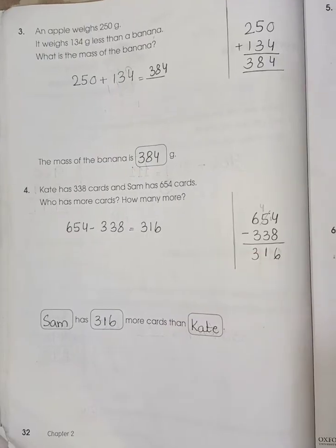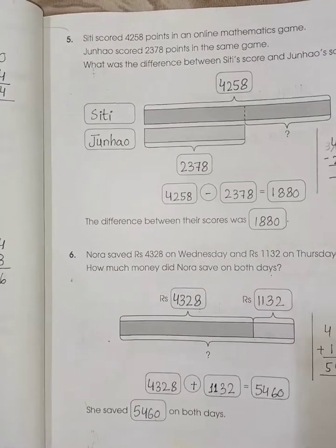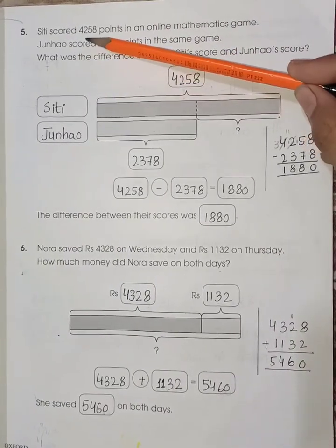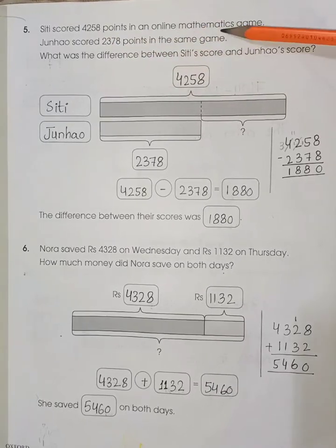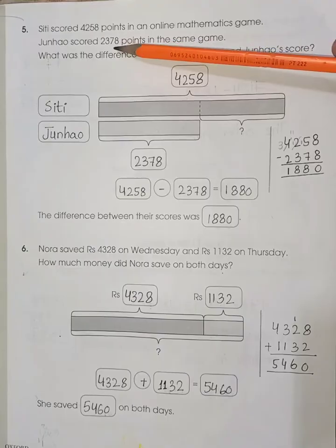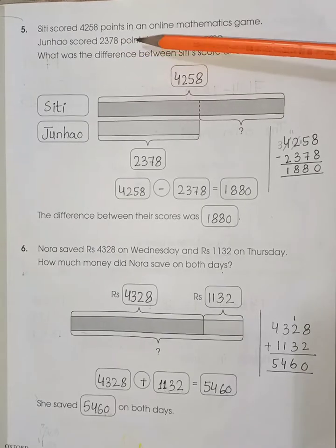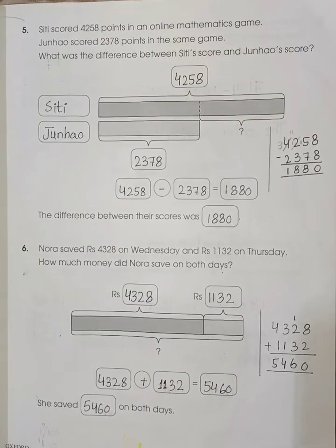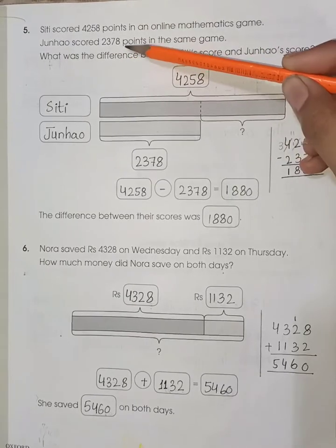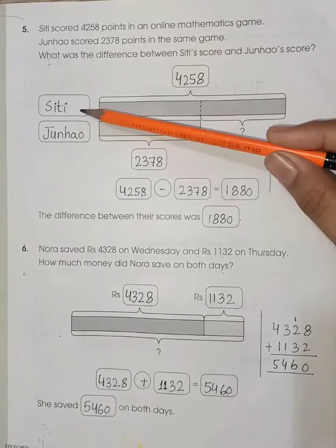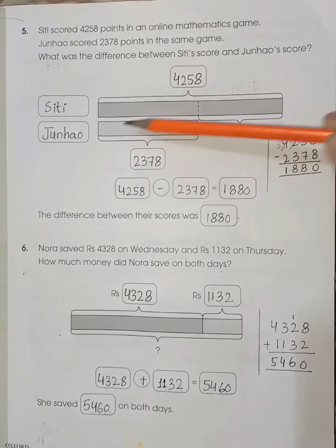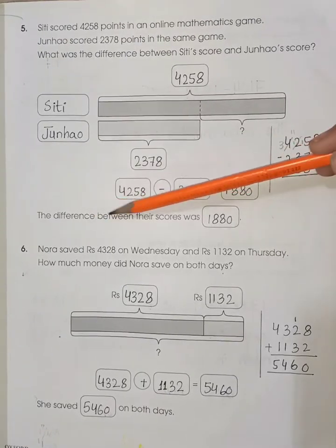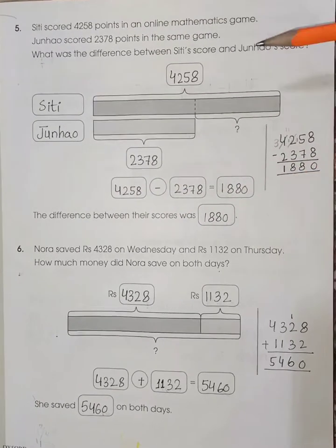Page number 33, word problem number 5: City scored 4258 points in an online mathematics game. Jin Hao scored 2378 points in the same game. What was the difference between City's score and Jin Hao's score? When we talk about the difference, we subtract both numbers. We write City's score, then Jin Hao's score, subtract, and the difference between their scores was 1880.